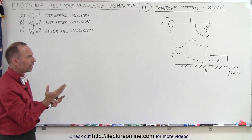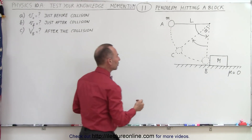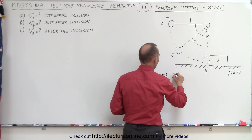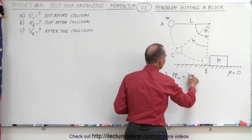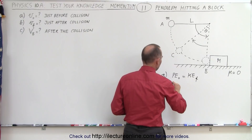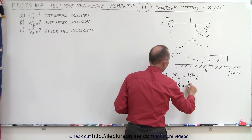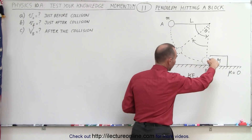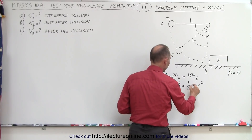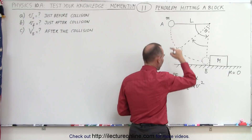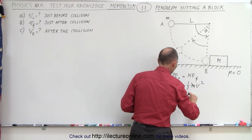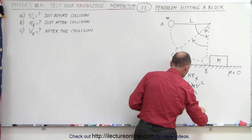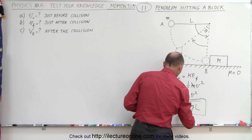For part A, that's fairly straightforward — it's a conversion from potential energy to kinetic energy. We can say that the potential energy initial equals the kinetic energy final: MGH equals one-half MV squared. The M's cancel out, and the height equals the length of the pendulum, so GL equals one-half V squared, giving V equals the square root of 2GL.